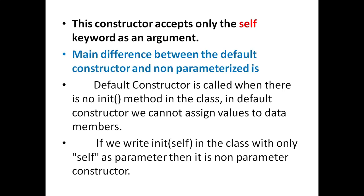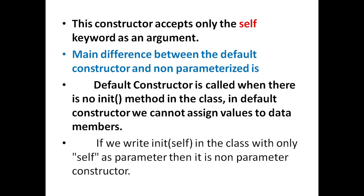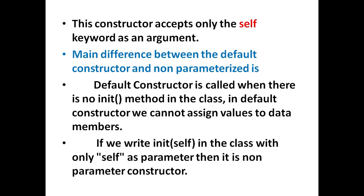The main difference between the default constructor and the non-parameterized constructor is: the default constructor is called when there is no init method in the class, and in a default constructor we cannot assign values to data members. If we write init in the class with only self as a parameter, then it is a non-parameterized constructor.